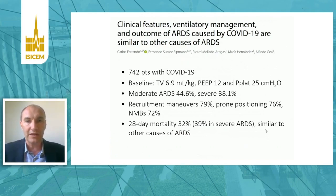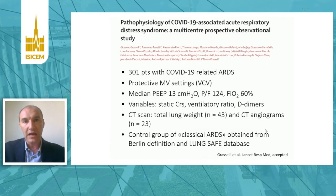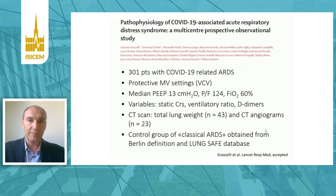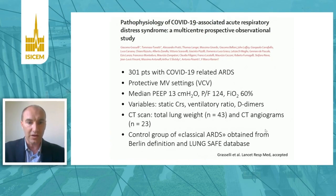We recently published a paper in Lancet Respiratory Medicine comparing a large series of more than 300 COVID-19 patients to a control group with classical ARDS from the LUNG SAFE and Berlin definition databases. All COVID-19 patients were ventilated with protective mechanical ventilation in volume control mode. Median plateau pressure was 13 cmH₂O, median P/F ratio 124 mmHg, and median FiO₂ 60%. We compared respiratory system compliance, ventilatory ratio as a proxy of dead space, and D-dimers as indicators of endothelial and vascular damage.